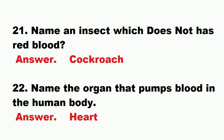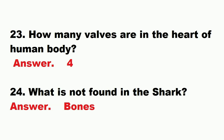Question: name an insect which does not have red blood. Answer: cockroach. Question: name the organ that pumps blood in the human body. Answer: heart. Question: how many valves are in the human heart? Answer: 4.